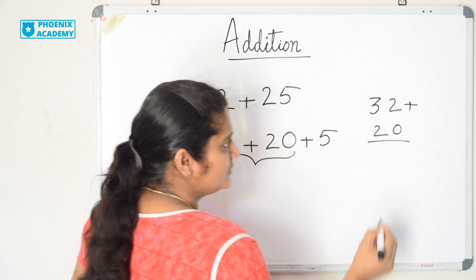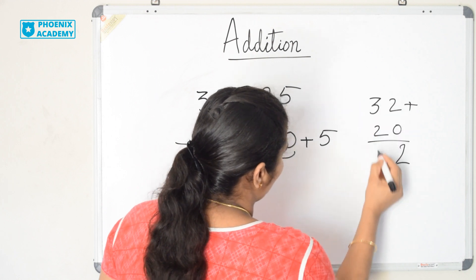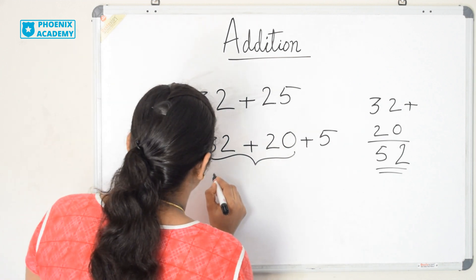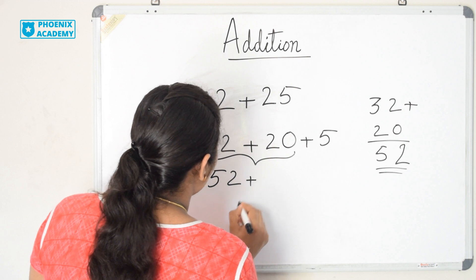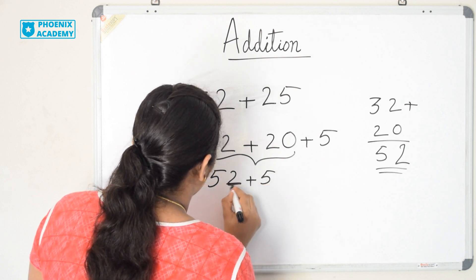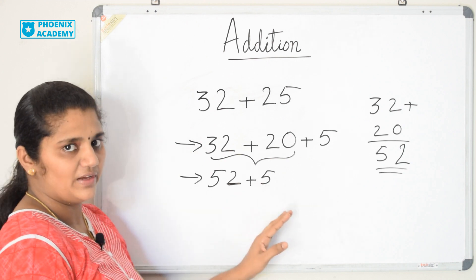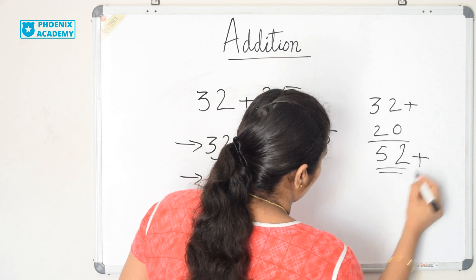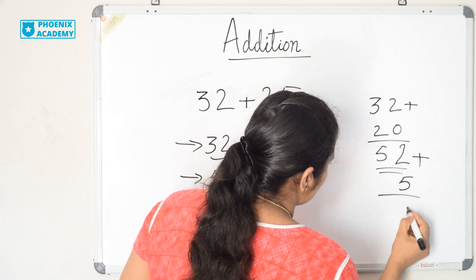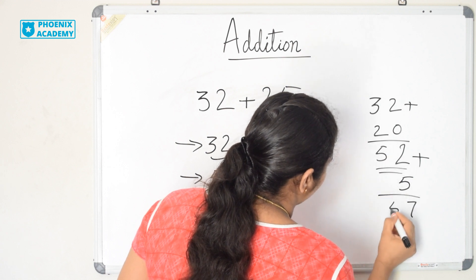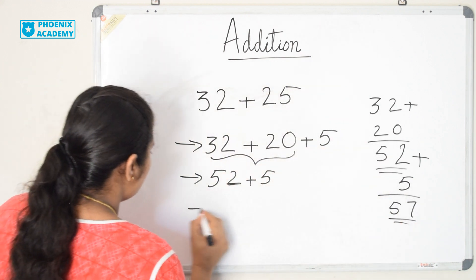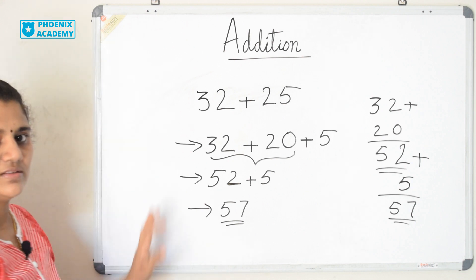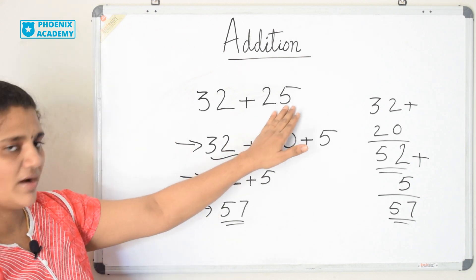32 plus 20: 2 plus 0 is 2, 3 plus 2 is 5. So 32 plus 20 is 52. Then 52 plus 5: 2 plus 5 is 7, so the answer is 57. This is how we can add by breaking one number.